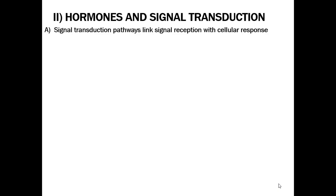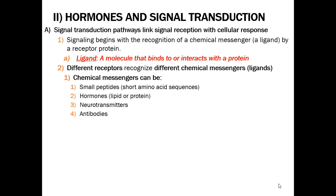Hormones' main role is in signal transduction. Signal transduction is a pathway that links the reception of a signal with a cellular response. To transduce means to transfer the signal from outside the cell to inside the cell. Signaling always begins with the recognition of a chemical messenger — which can be a hormone — and these are known as ligands. A ligand binds to a receptor, and different receptors react with different types of chemical messengers. That's why we have specificity in our body — it's basically a one-to-one relationship: one hormone binds to one receptor and triggers a specific response inside the cell.